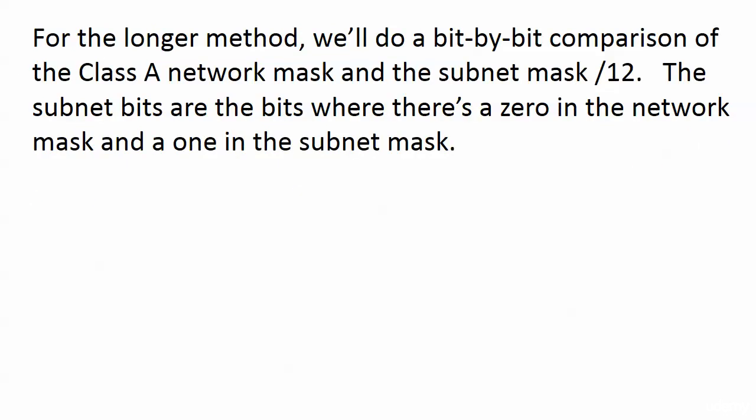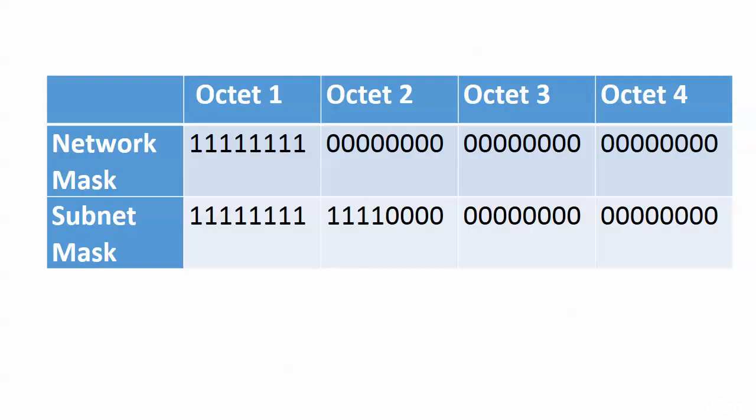So with all that preamble, for the longer method we're going to do a bit by bit comparison of the Class A network mask, because we know 10.0.0.0 is a Class A network, and the subnet mask slash 12. How do we identify the subnet bits when the subnetting has already been done?